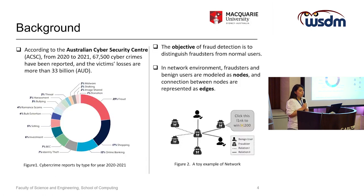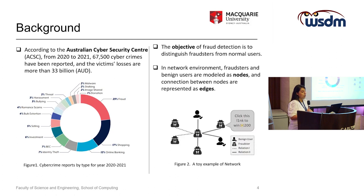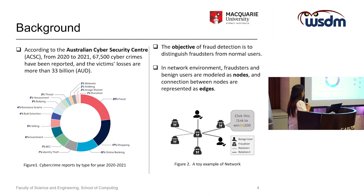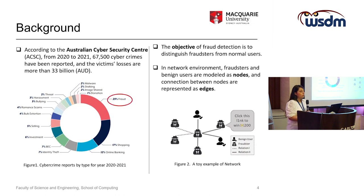Let's have some background. According to the Australian Cyber Security Center, from 2020 to 2021, around 70,000 cyber crimes have been reported, and the victims' losses are more than 33 billion Australian dollars. This diagram shows the cyber crimes reported by type — as you can see, the first place goes to fraud. So we can conclude that building a very safe and secure internet environment is a vital task.